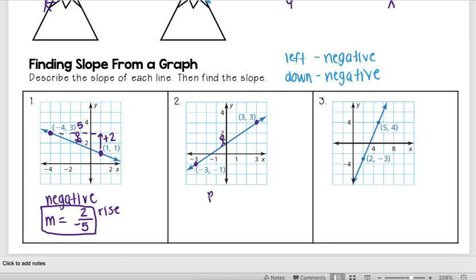And I see I go up one, two, three, four—go up four—and then I go to the right one, two, three, four, five, six. And so that means that my slope is going to be my rise, four, over my run, six.